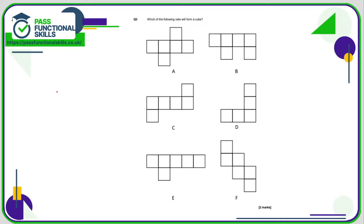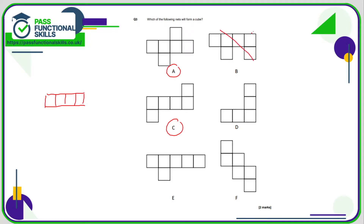Which of the following nets will form a cube? One of the most obvious ways is to have four squares in a line, and as long as there is one square above and one square below — it doesn't matter where they are — it's a cube. So A is a cube, C is a cube. B is not a cube because both extra squares are on the bottom. E is also not a cube because there's only one on the bottom. D isn't a cube because we need six squares, not five.